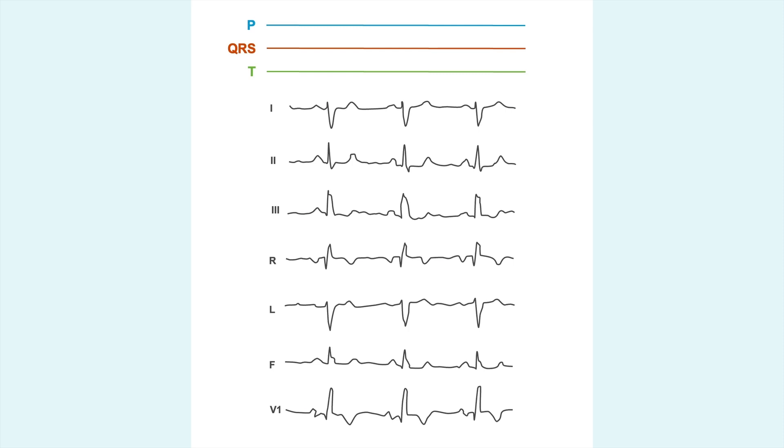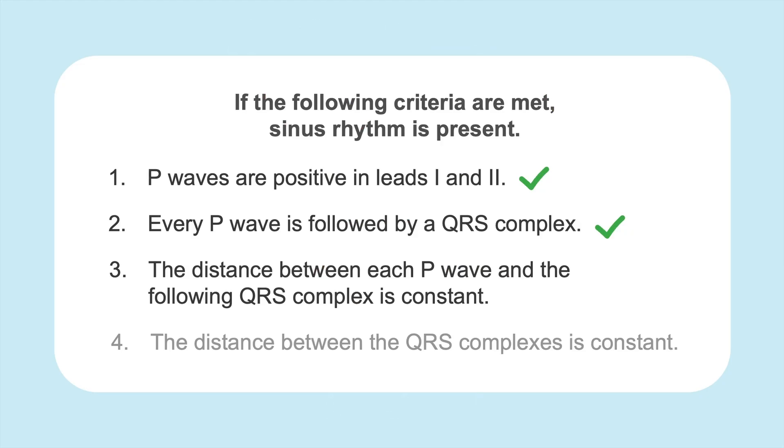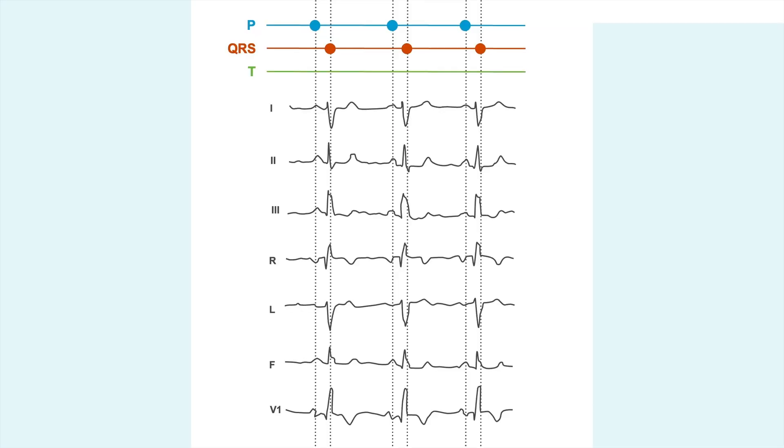Number two, every P wave is followed by a QRS complex. Let's look at our first beat. We have a P followed by a QRS, then again a P followed by a QRS, P QRS. Number three, the distance between each P wave and the following QRS complex is constant, which is true here. So this distance from here to here is the same as the distance from here to here and from here to here.